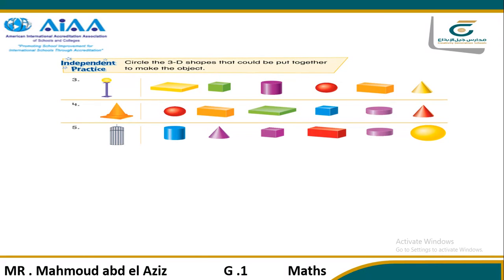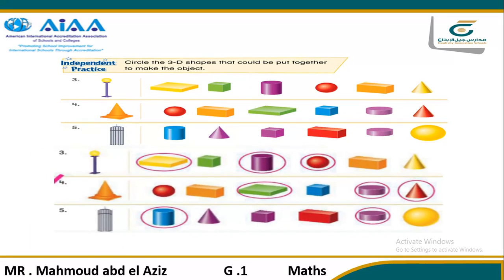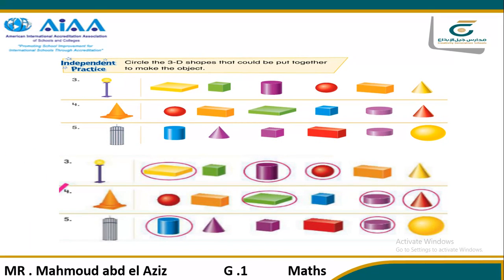Now with our first question here: Circle the three-dimensional shapes that could be put together to make them. The first one here — which 3D shapes do you see? Excellent: sphere, rectangular prism, and cylinder. So in the first one, you will circle rectangular prism, cylinder, and sphere. The second shape here — which 3D shapes do you see? Rectangular prism, cylinder, and cone.